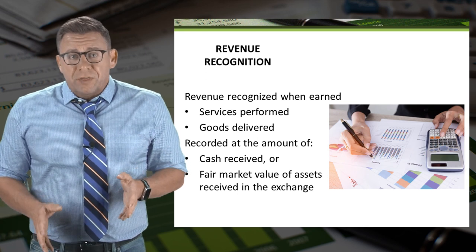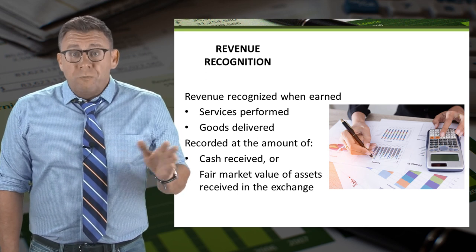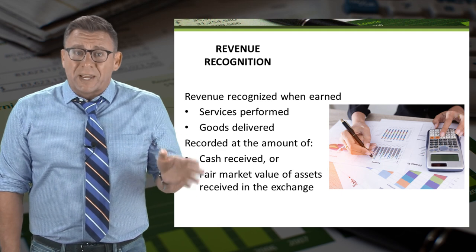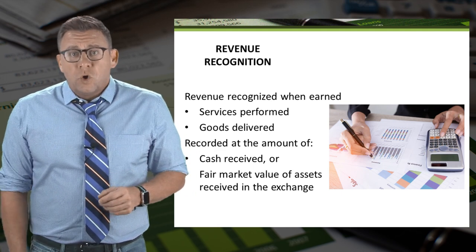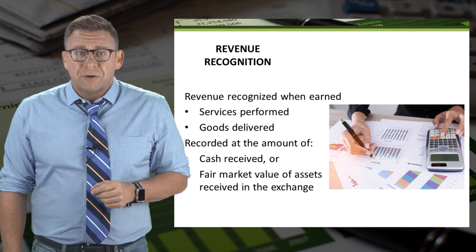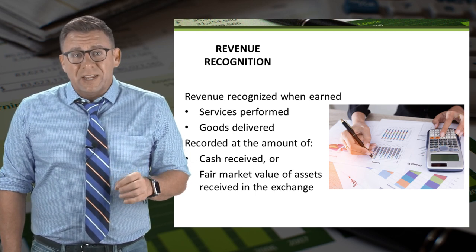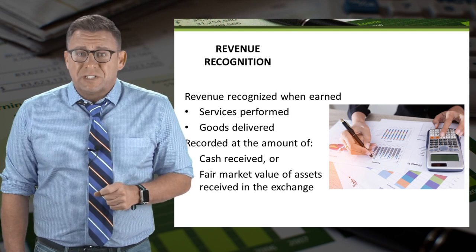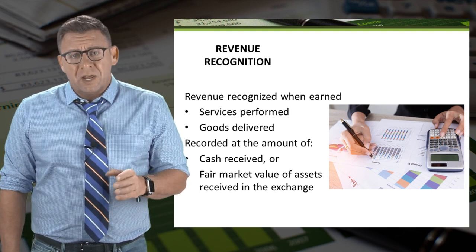To start with, let's revisit revenue recognition. Hopefully you recall that revenue is recognized — and by that we mean journalized — when service is performed or goods are delivered. The amount of the journal entry is the fair value of the assets received. Usually that will be cash, but not always.